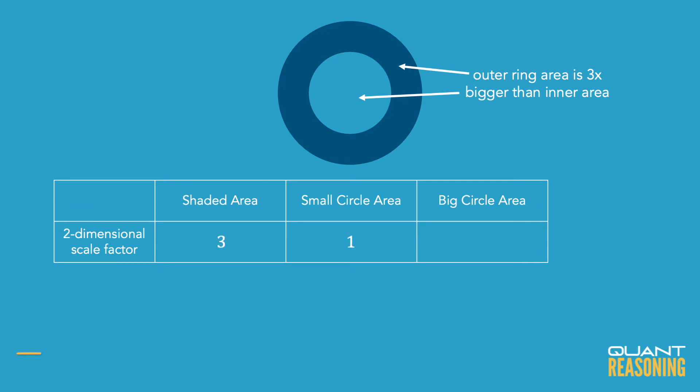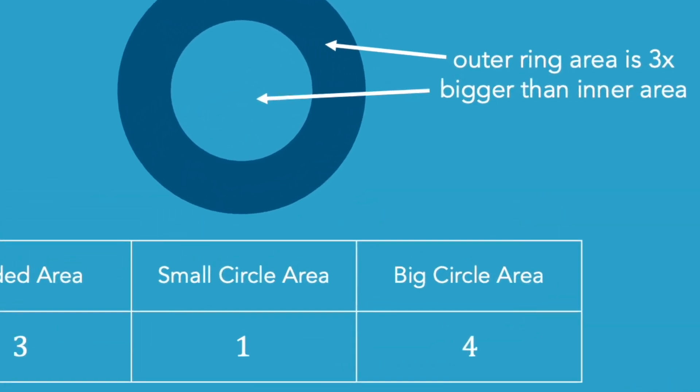so if I build a ratio, ring to small circle to big circle, I would say that that's a ratio of three to one to four. So the third column is my inference column and it's where I put in the sum of the first two columns.